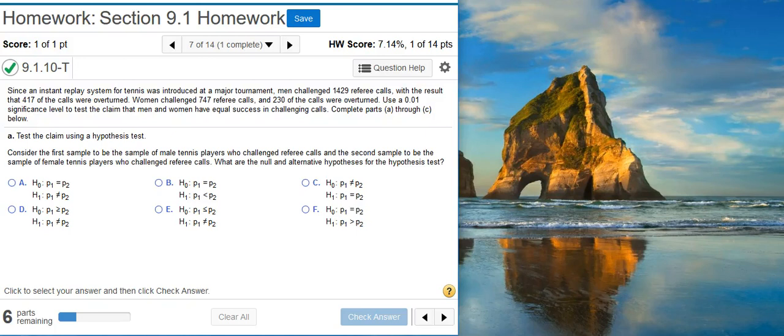Howdy, I'm Professor Curtis of Aspire Mountain Academy. Here with more statistics homework help, today we're going to learn how to use StatCrunch to perform hypothesis testing on two proportions of referee calls. Here's our problem statement: Since an instant replay system for tennis was introduced at a major tournament, men challenged 1429 referee calls with the result that 417 of the calls were overturned.